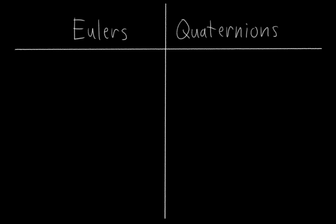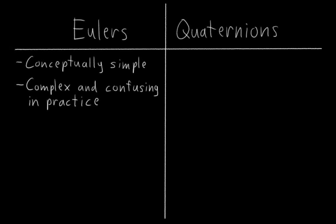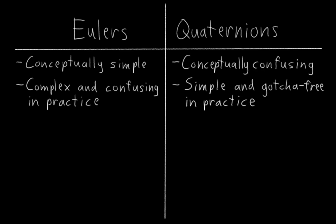As I mentioned in the last video, Eulers are really simple conceptually, but in practice they're often complex and confusing. By contrast, quaternions are conceptually confusing, but in practice they are shockingly simple and gotcha-free to use.